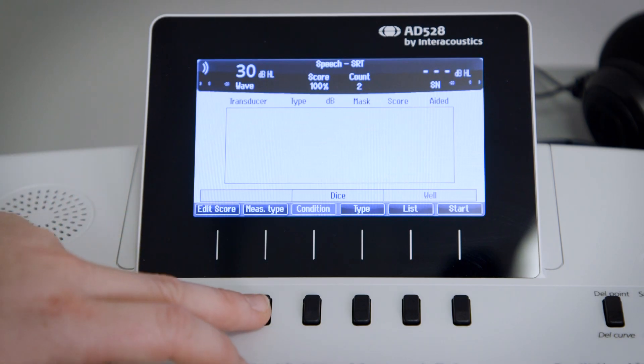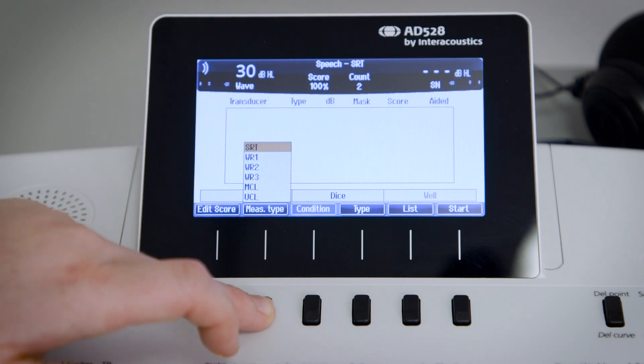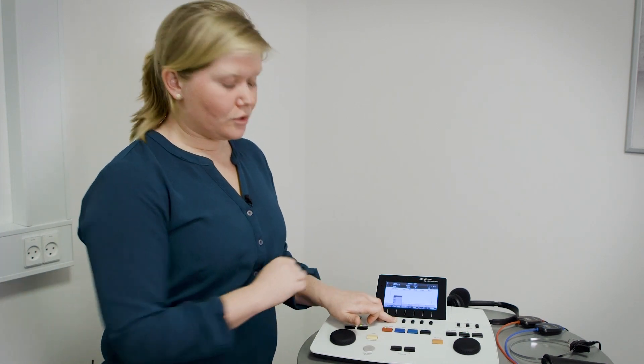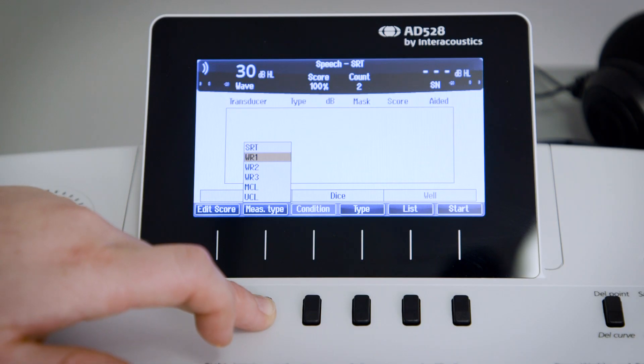In addition to that, you can change your measurement type. Right now it's set for the SRT, the speech recognition threshold, that can be changed to the word recognition where we have a word recognition one, two, and three.